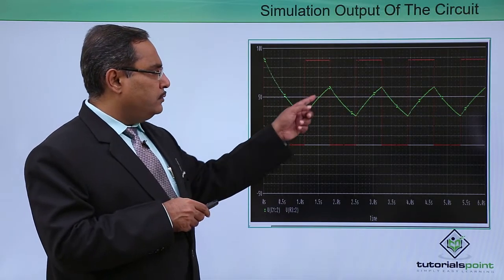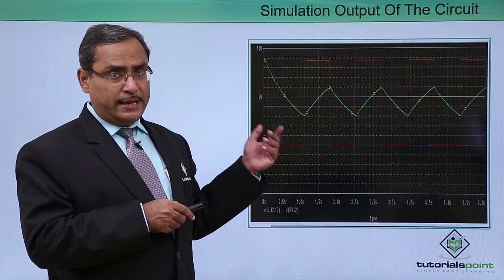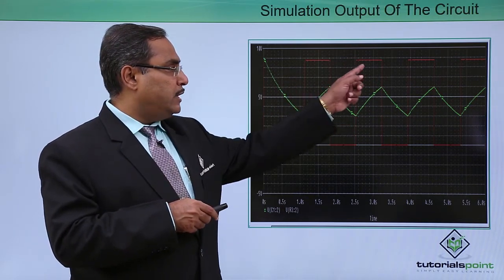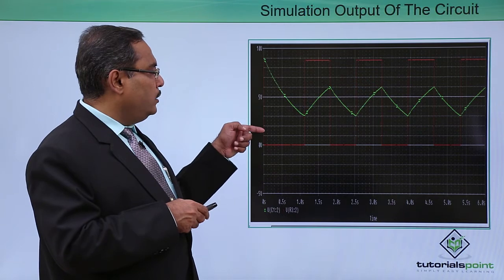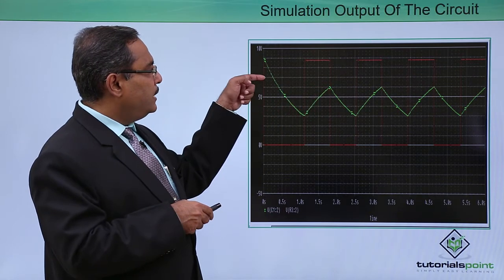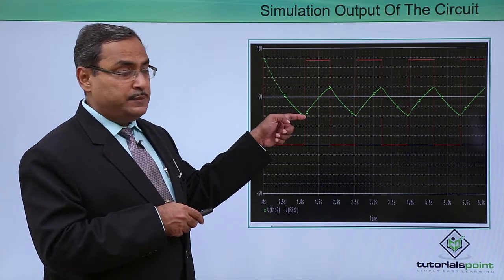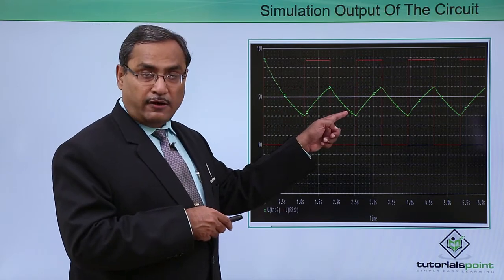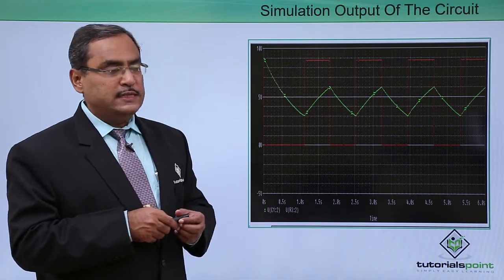This is the graph showing the charging and discharging time in green and the respective output in red. The output is oscillating. The capacitor voltage varies from 0 to 6 volts — that is, VCC/3 to 2VCC/3. So the charging and discharging graph oscillates between VCC/3 and 2VCC/3.